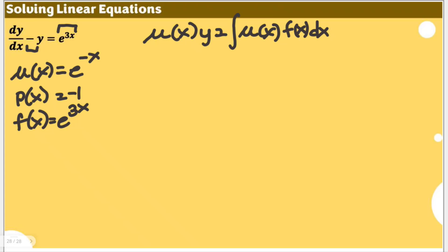So simply plugging in here our expression, you have here e to the power of negative x, y is equal to the integral of e to the power of negative x times our f(x) which is e to the power of 3x, then dx.